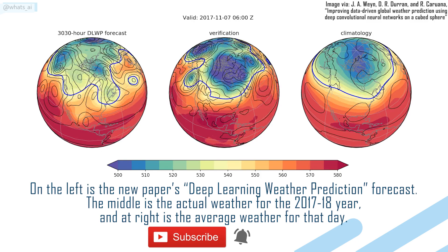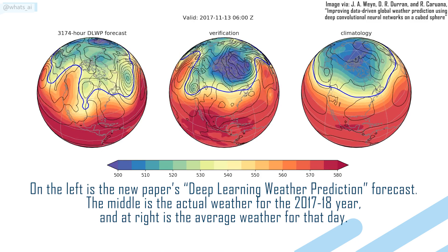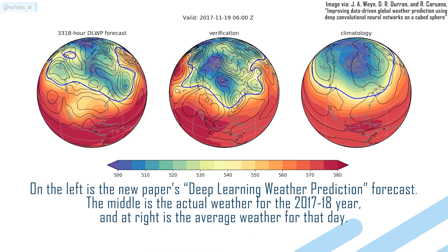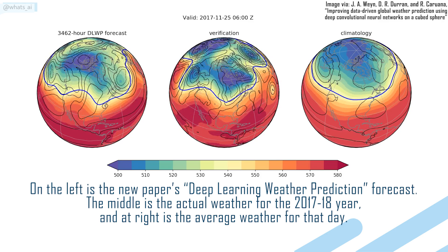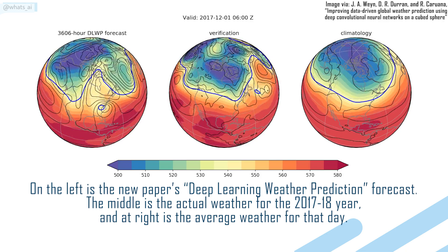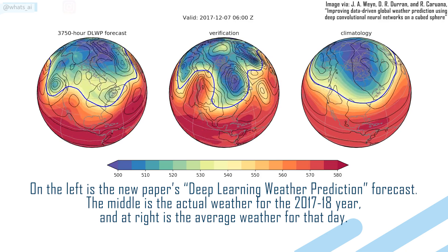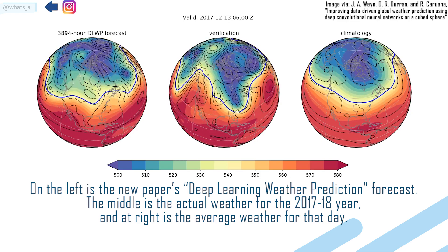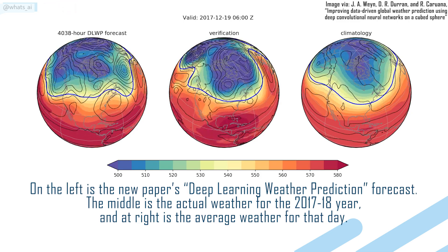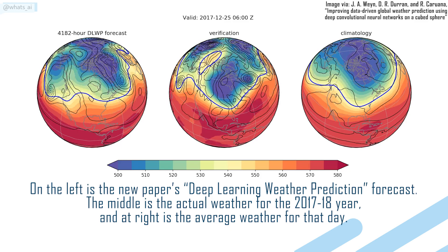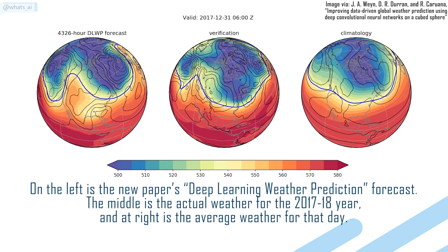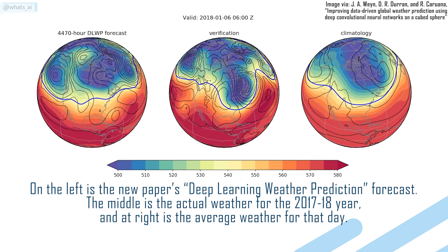The current traditional approach for weather forecasting uses what we call numerical weather prediction models. It uses mathematical models of the atmosphere and oceans to predict the weather based on current conditions. It was first introduced in the 1920s and produced realistic results in the 1950s using computer simulations.